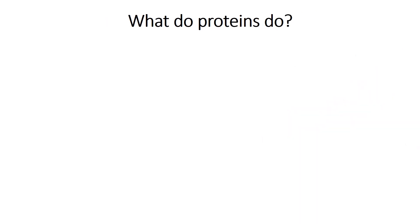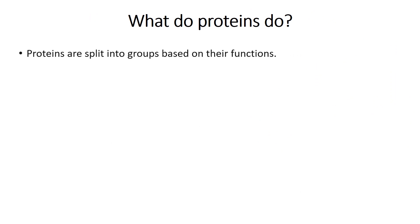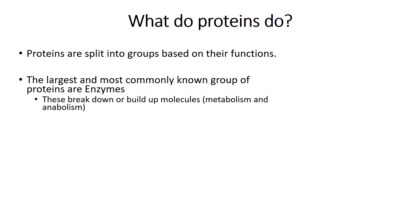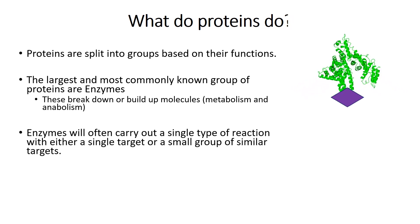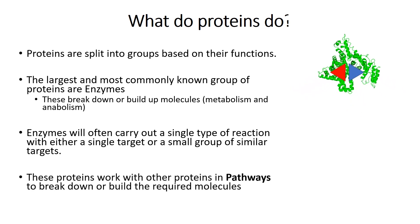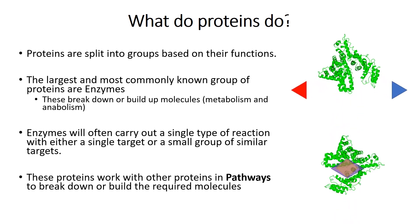Proteins have a wide range of uses in cells and are split into groups depending on their functions. The most commonly known group of proteins are called enzymes. These are the proteins responsible for breaking down and building up molecules that cells need to survive, processes that are called metabolism and anabolism respectively. Enzymes will often perform one kind of biochemical reaction, such as the example on the right. Here, the enzyme is taking two molecules, the red and blue triangles, and joining them together to form one molecule represented by the purple diamond. Whilst each individual enzyme performs one action, this is not enough to form all of the molecules that the cell needs to make or break. To do this, enzymes will often work with a group of other enzymes in what's known as a pathway, to take a molecule that the cell can absorb and turn it into one that is required by the cell to function.